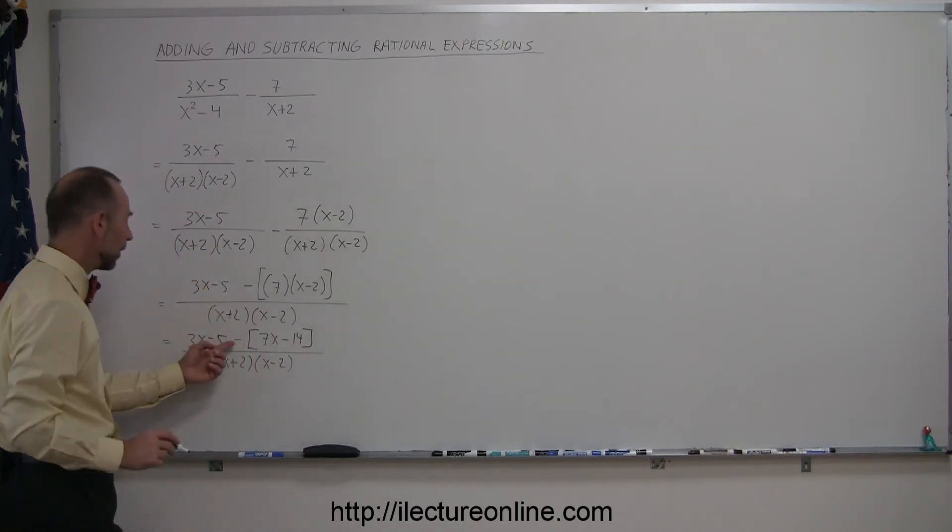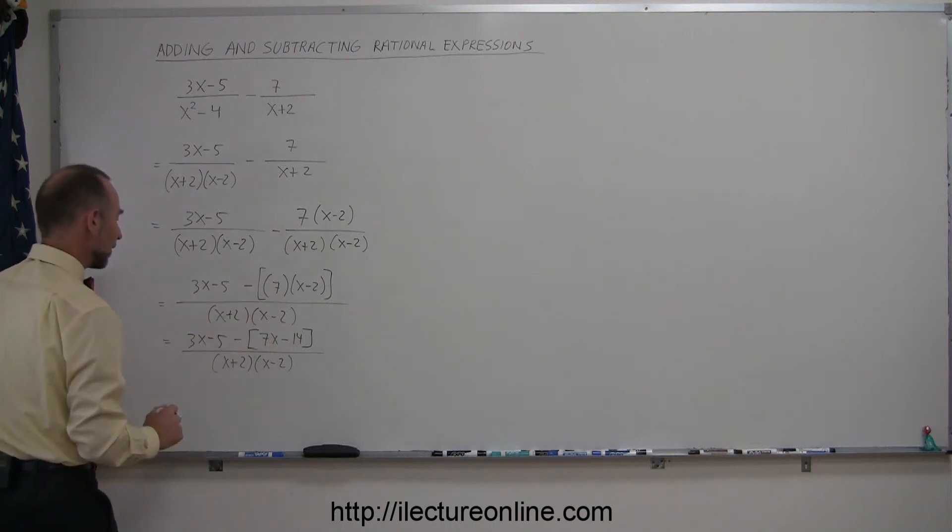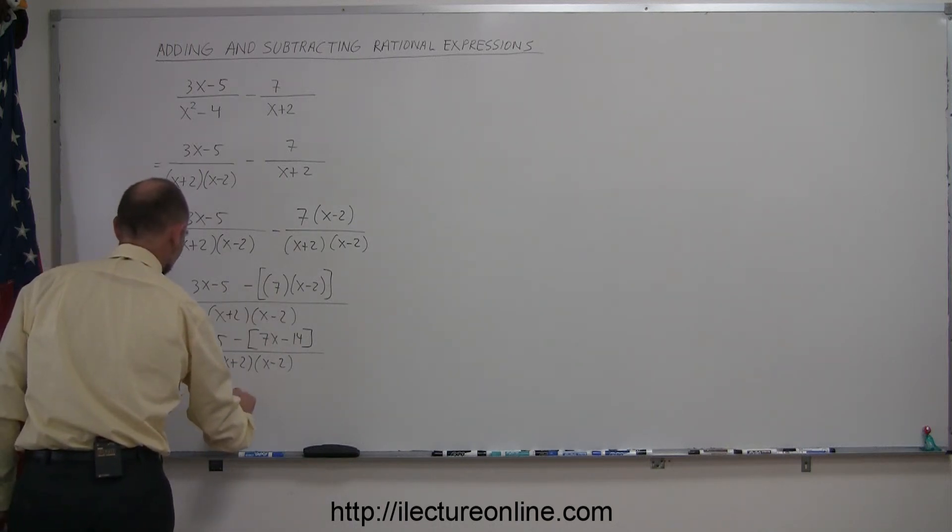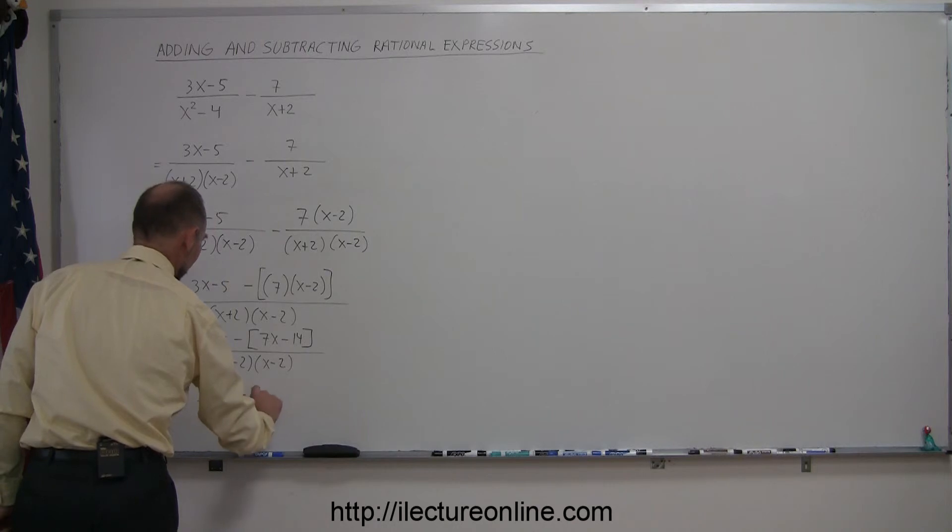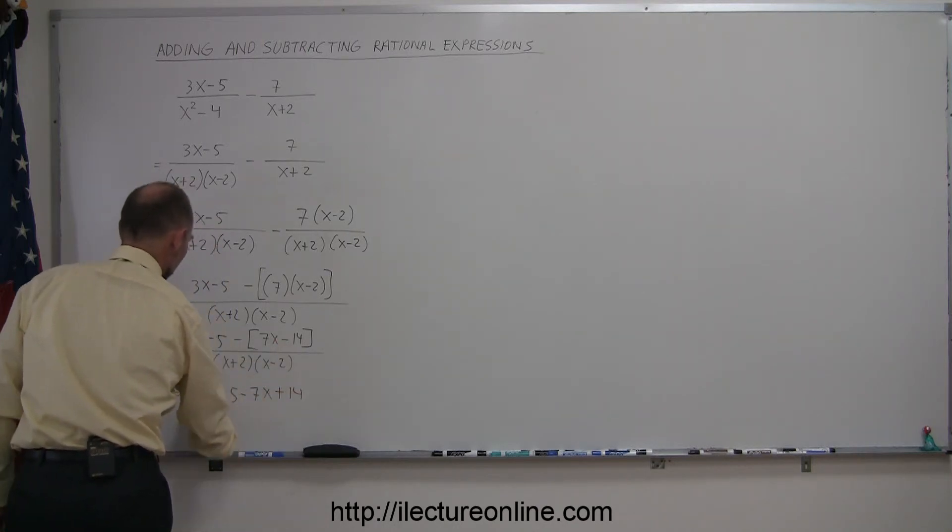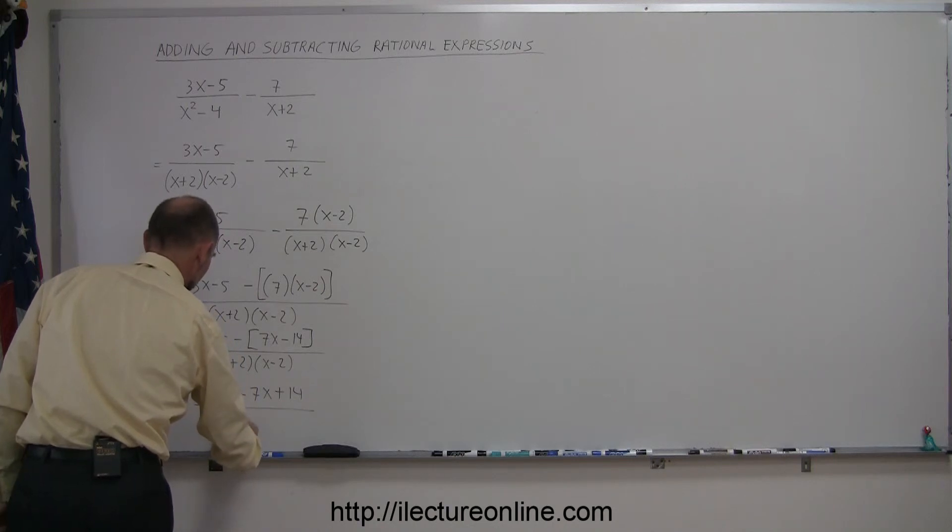Then finally I can apply the negative sign to everything inside the brackets, so this equals 3x minus 5 minus 7x, and the negative times the negative becomes plus 14, all divided by x plus 2 times x minus 2.